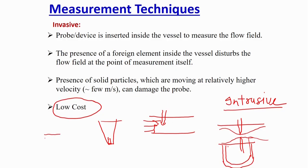We will also try to see some of these techniques for invasive multiphase flow measurement. The best example is the pitot tube. Cost-wise, it is nothing but a small tube connected with a manometer. I can add a pitot tube to a pipeline and it gives me the point velocity. It is very cheap and widely used. Though the velocity may change at the point of measurement itself, it is very accurate in single-phase flow, but in multiphase flow you will just get an idea.